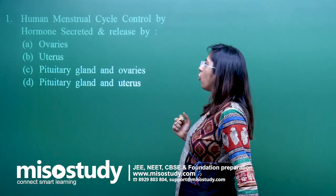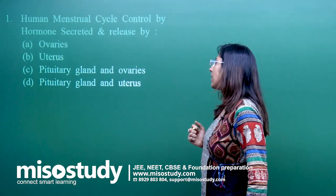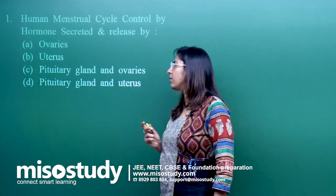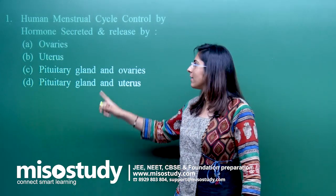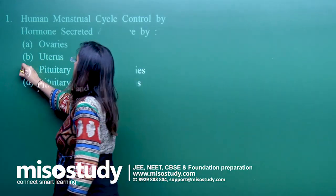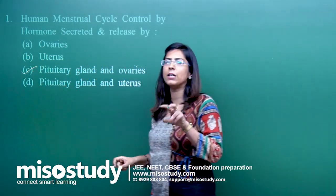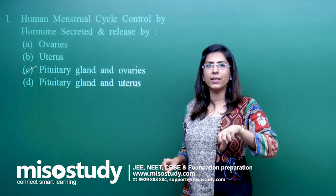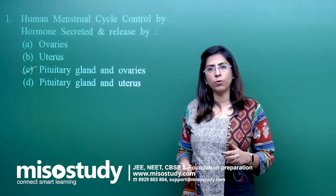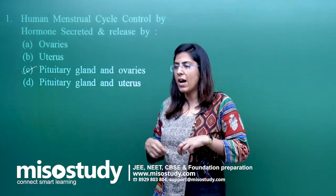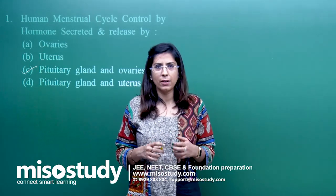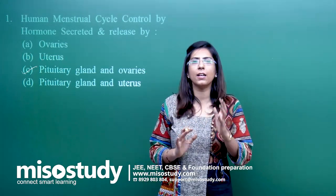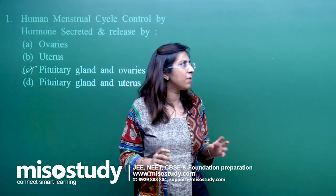The options given are: ovaries; uterus; pituitary glands and ovaries; or pituitary glands and uterus. The correct answer is option C — pituitary gland and ovaries. These two glands secrete hormones. The pituitary secretes follicular stimulating hormone and luteinizing hormone, which act on the ovaries, which in turn secrete estrogens. Let us understand the whole phenomenon with the help of a feedback mechanism.